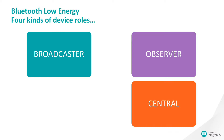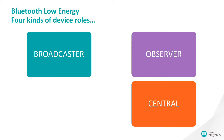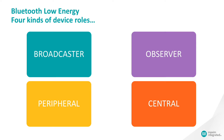The next role is called a central. Like an observer, it listens for advertisements, but unlike an observer, it can interact with any station that it hears. Once the central has connected to another station, that station exclusively communicates with the central until the central ends the session. The station with which a central communicates is called a peripheral. A peripheral sends out advertisements like a broadcaster does, and when the central receives the advertisements, it can connect to the peripheral. Once connected, the peripheral communicates only with that particular central.